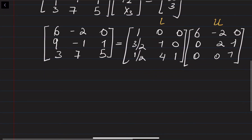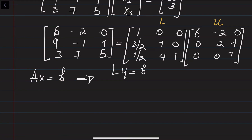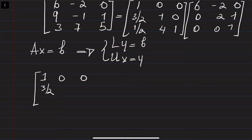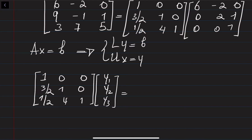What we are going to do is, instead of solving Ax = B, we first solve Ly = B. Then once we find y, we solve Ux = y. So the L matrix [1, 0, 0; 3/2, 1, 0; 1/2, 4, 1] is multiplied by the unknown vector [y1, y2, y3], and this should equal B = [2, 2, 3].